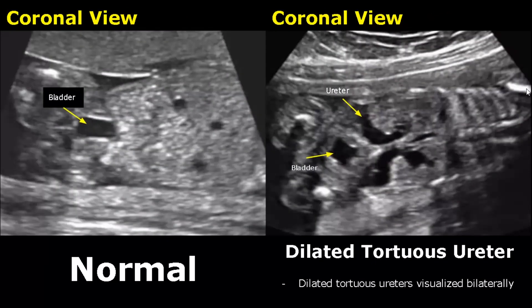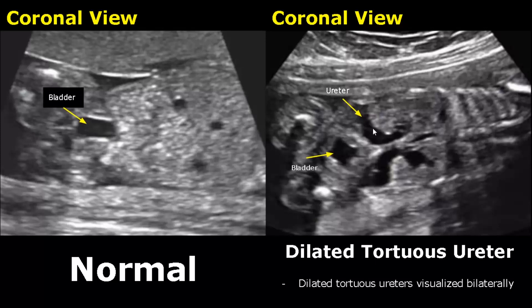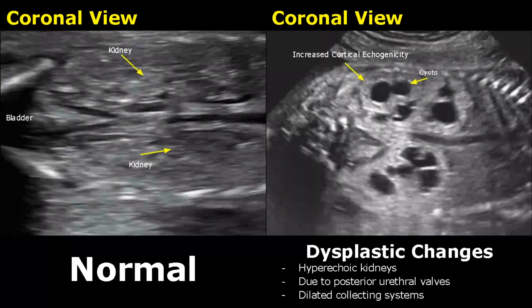In this image, we can see dilated tortuous ureters bilaterally — they appear curved and dilated. This can be due to any obstruction related to the urethra or the ureter itself. In posterior urethral valves, membranes form in the posterior part of the urethra near the bladder, which can cause obstruction of the entire collecting system, leading to dysplastic changes in the kidneys.